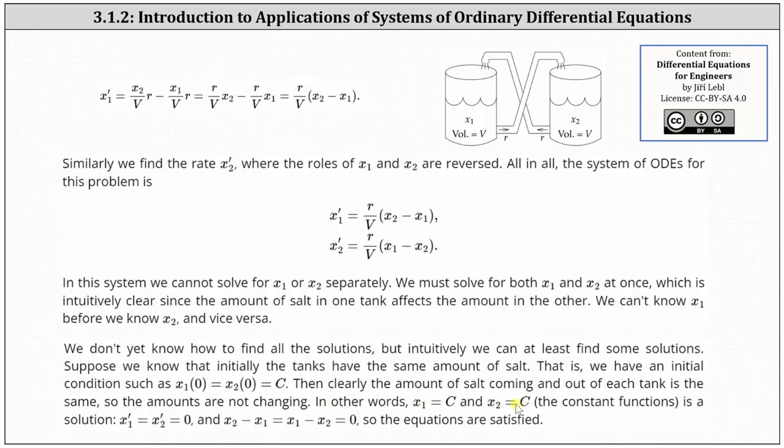This is a solution because x1 prime equals x2 prime equals 0, and x2 minus x1 equals x1 minus x2 equals 0, so the equations are satisfied.